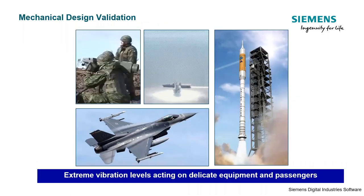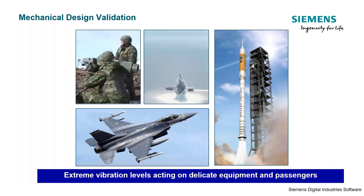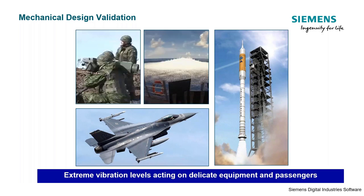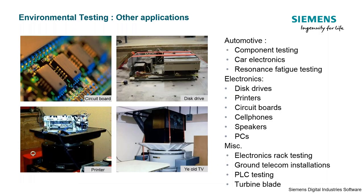Oftentimes people think of vibration testing in terms of military, maritime, aeronautical, or space applications — some of the more common well-known types. We can test to reproduce events like aircraft takeoff and landings, rocket launch, and transportation over rough terrain. But vibration testing can be used for every different type of product, including automotive components, small electronics, printed circuit boards, PCs, disk drives, turbine blades, etc. Vibration control testing is applicable to a very wide array of fields.